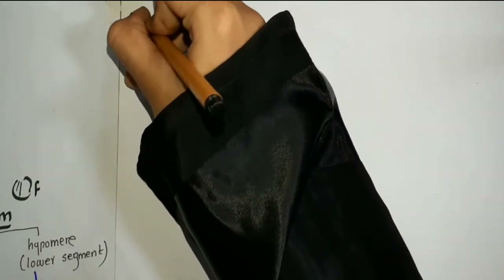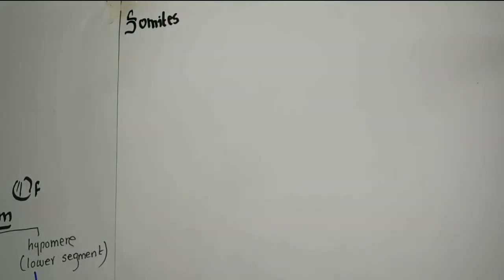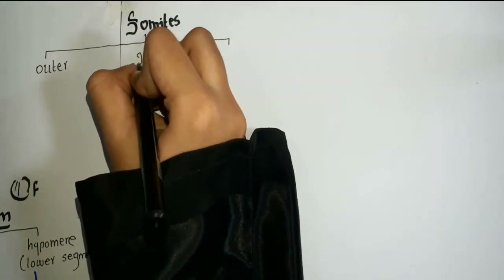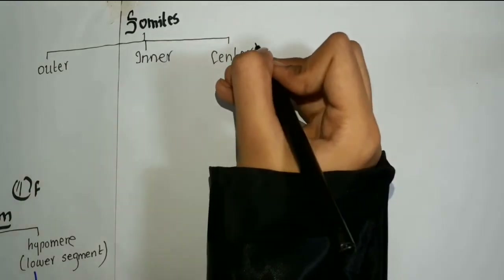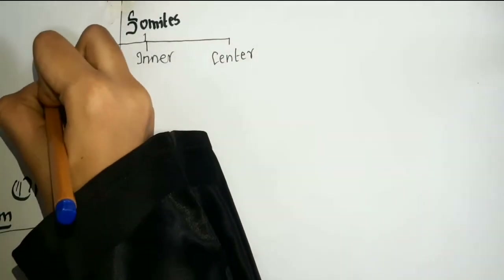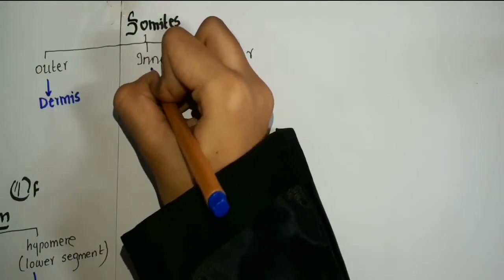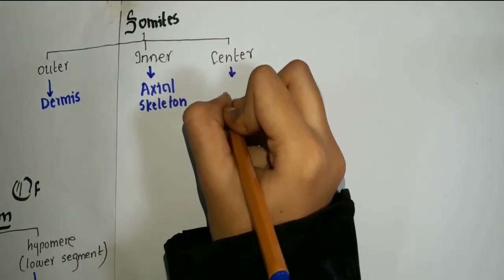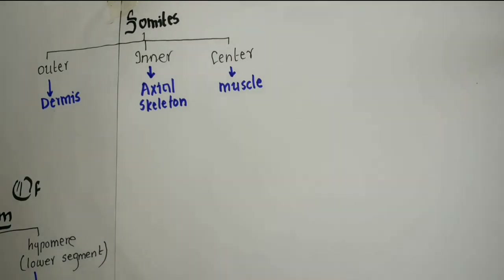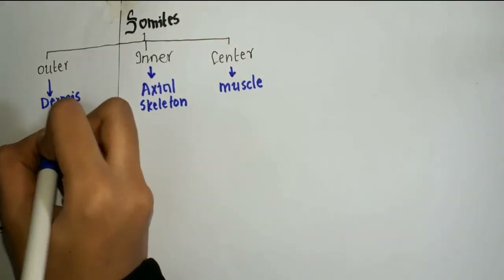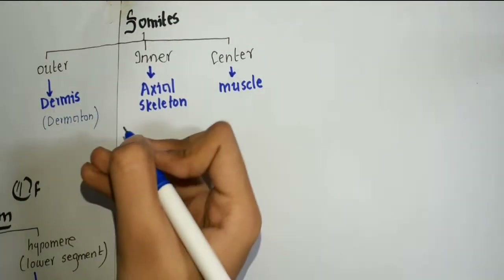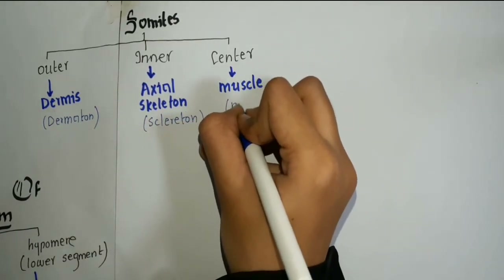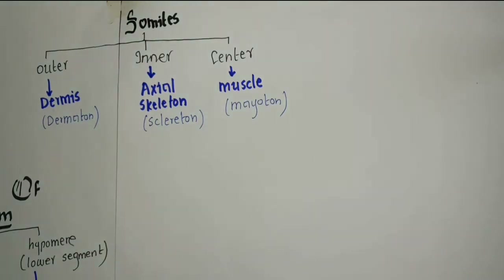Let us see how somites differentiate into bones, skeletons, and muscles. Somites are differentiated into three layers: the outer, the inner, and the center. From the outer portion, dermis is formed — this is called the dermatome. From the inner portion, axial skeleton is formed — this is called the sclerotome. Axial skeleton includes the sternum, ribs, etc. From the center portion, muscle is formed — this is called the myotome.